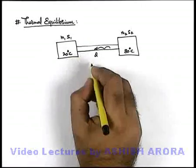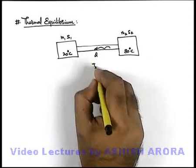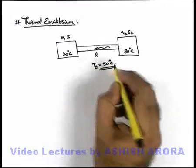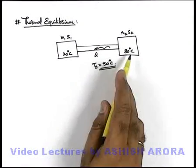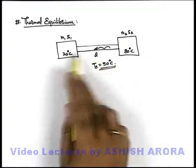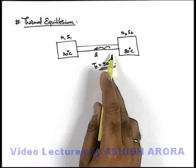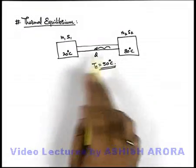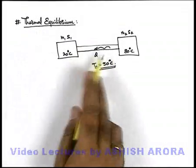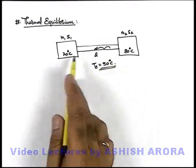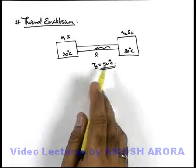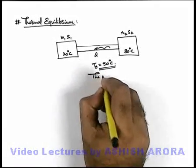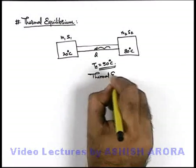For example, after the exchange of heat, the equilibrium temperature of the system approaches 50 degrees centigrade. When the temperature of the two bodies becomes equal, no net flow of heat takes place between the two, as two bodies at the same temperature never exchange heat with each other. This situation is called thermal equilibrium — when the bodies are at the same temperature, they are said to be in thermal equilibrium.